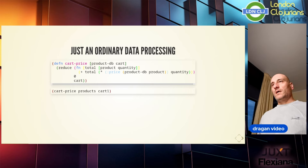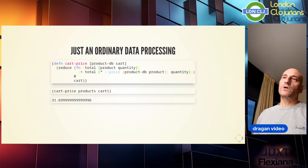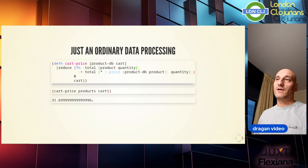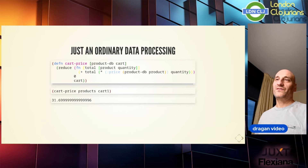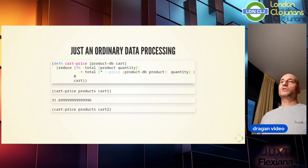Now we have the cart-price function. Given the database of products, cart one costs 31.70 — some floating-point imprecision, but just to remind you, please don't kill me over this; I'm keeping the example as simple as possible. Of course, we can call this function on different carts and get the answers we need: 23.7, et cetera.